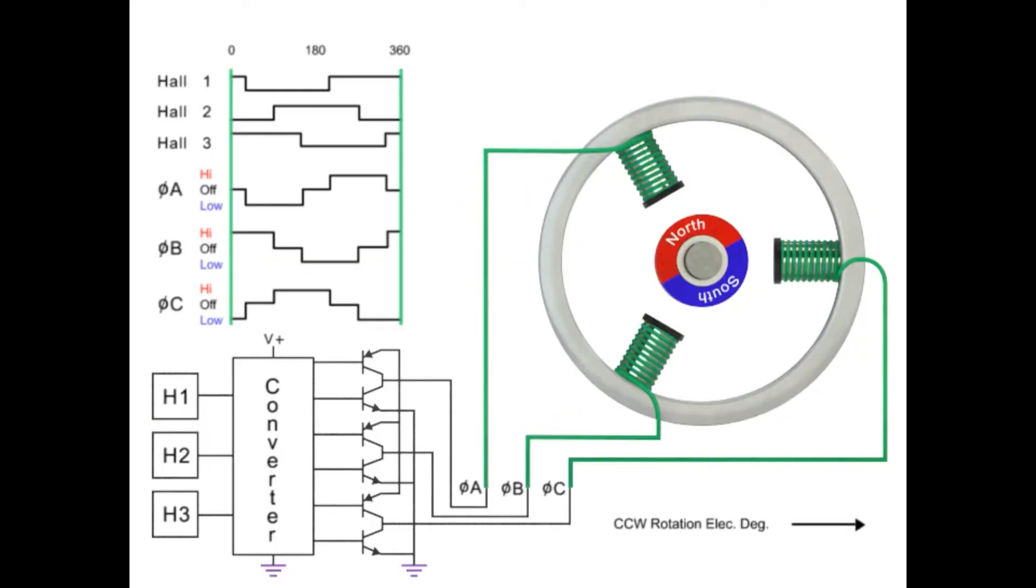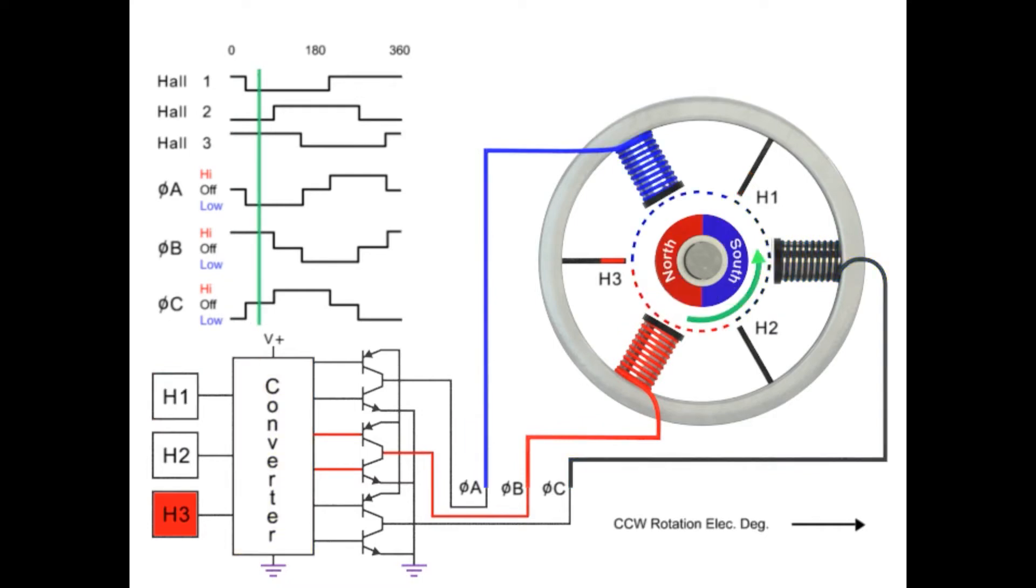The sequence is further explained here when the Hall effect sensors turn on. Coils are energized by the converter. The coils alternate in order, creating the magnetic field to turn the rotor. The sequence is repeated with the next set of Hall effect sensors and coils to continue rotation.